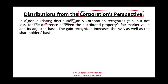In a non-liquidating distribution, the company is not going out of business. They're going to distribute some cash or property, but they're going to remain in business. An S corporation recognizes a gain, but not a loss, for the difference between the distributed property's fair market value and its adjusted basis. If we have a gain, that gain increases the AAA as well as the shareholder's basis, and the gain passes to the shareholders.